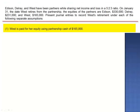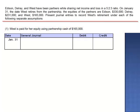Number 1. West is paid for her equity using partnership cash of $165,000. In this example, both the assets and the equity decrease by $165,000. We decrease West's capital account by debiting her capital account $165,000, and credit cash.